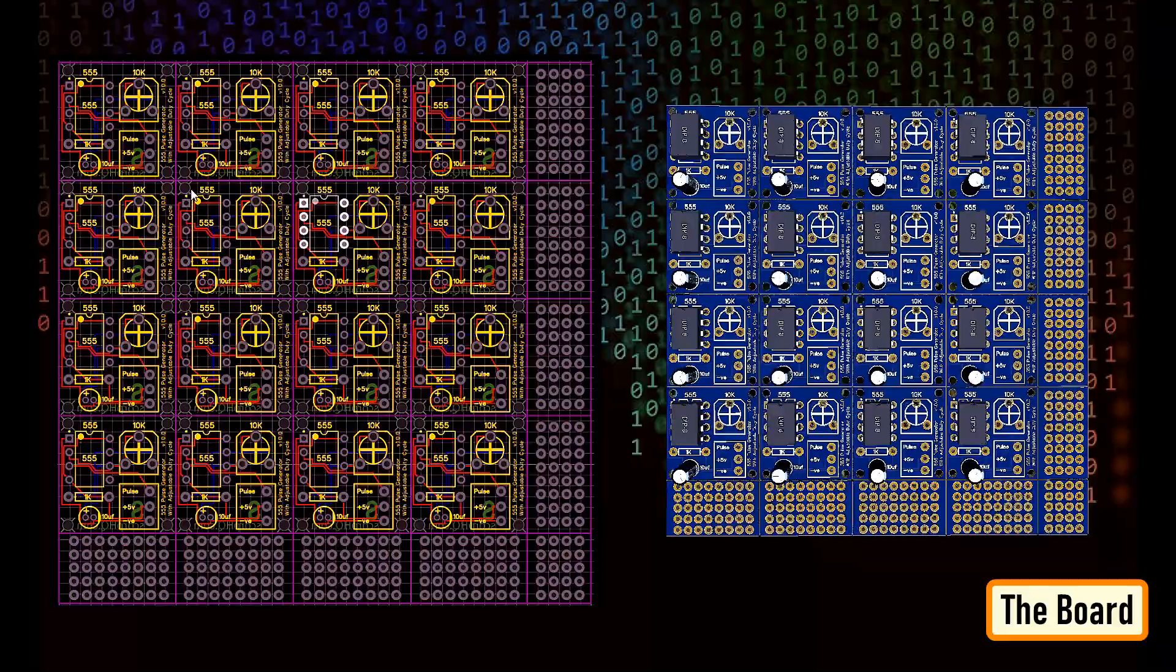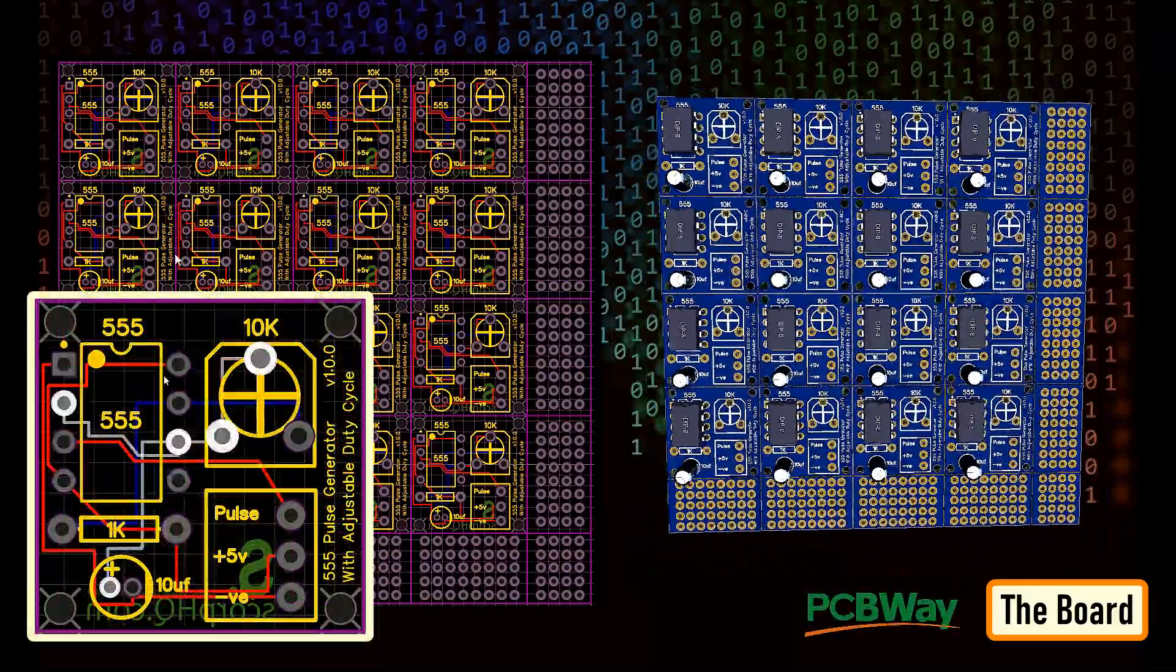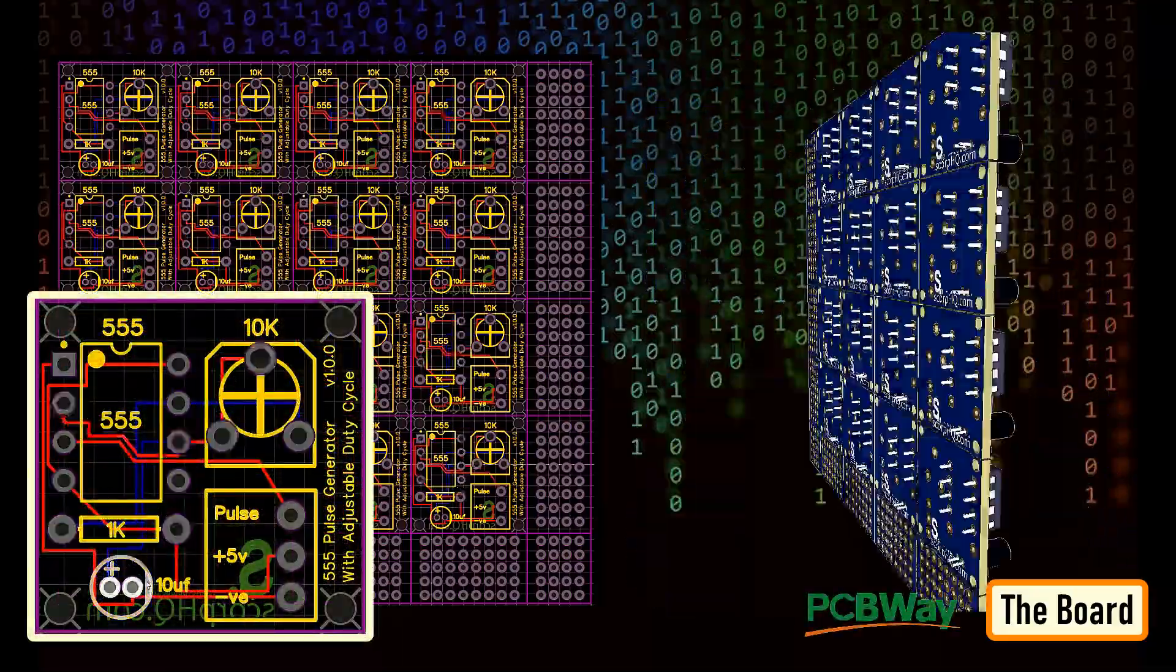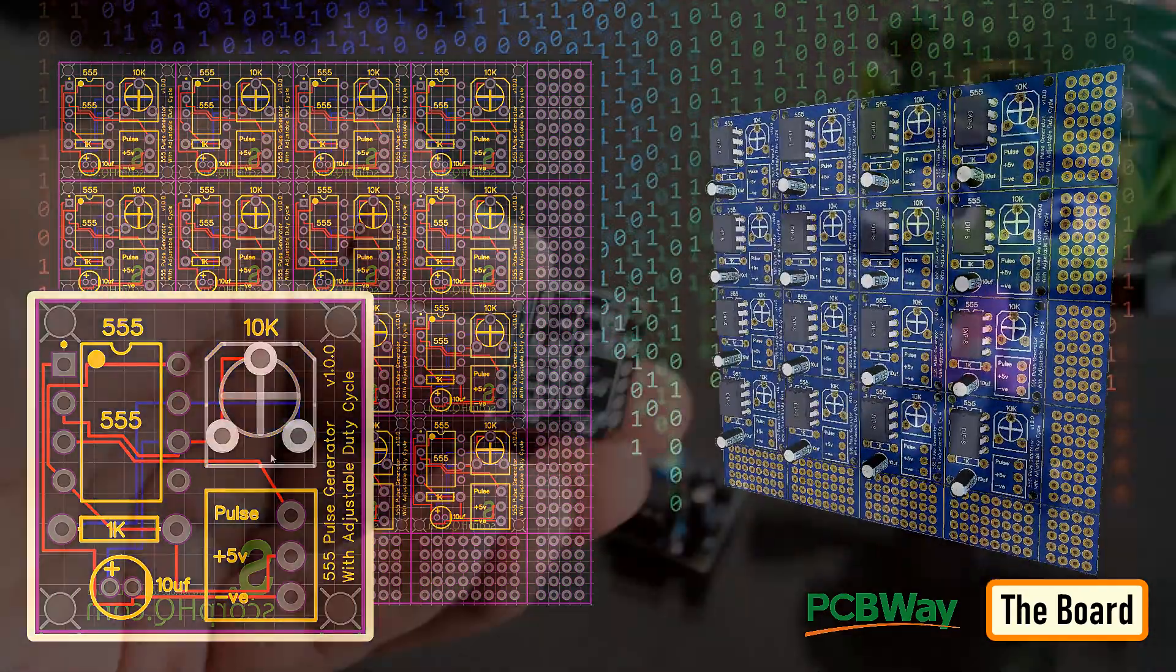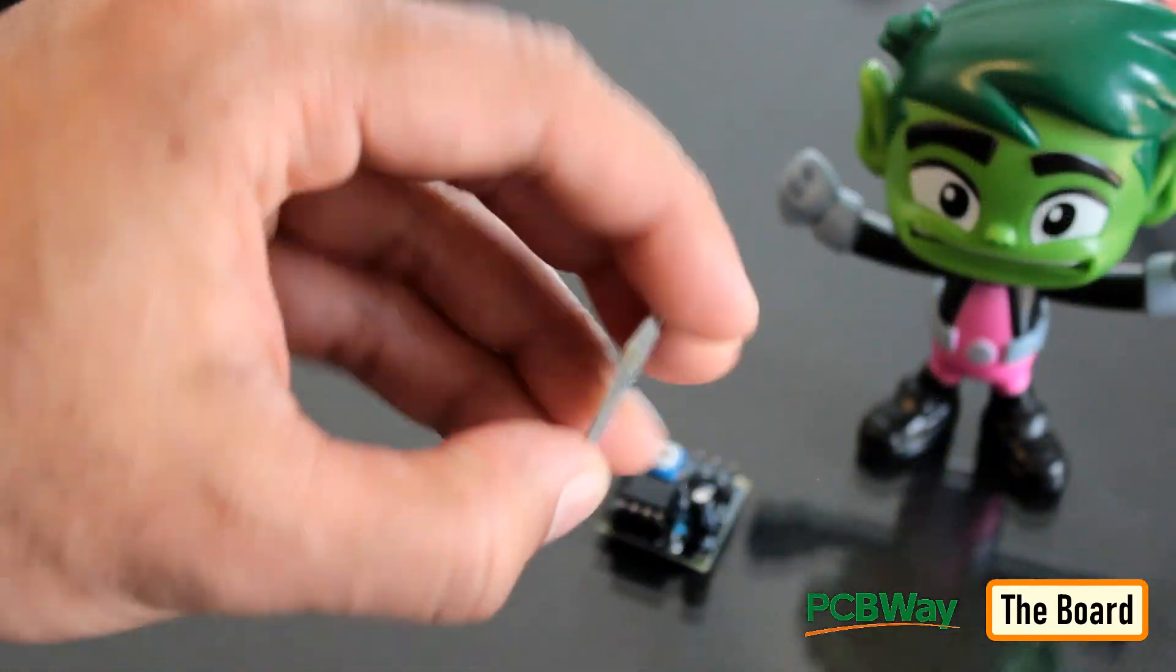So, this is how my board looks like in 2D and 3D. There are 16 breakout boards in this 100cm x 100cm assembly. You can download the Gerber file from the link below and order it from PCBWay.